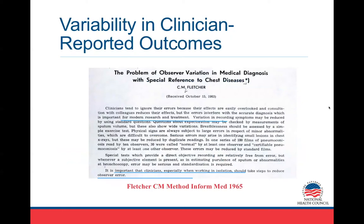Why is it important to get clinician-reported outcomes right? I wanted to show this paper from 1965 from a pulmonary medicine journal. The first line says: clinicians tend to ignore their errors because their effects are easily overlooked and consultation with colleagues reduces their effects, but the errors interfere with accurate diagnosis, which is important for modern research and treatment. It's important that clinicians, especially when working in isolation, should take steps to reduce observer error. The solution is to develop standardized measures — know what you're measuring, explain how to measure it, and understand how to interpret the results.